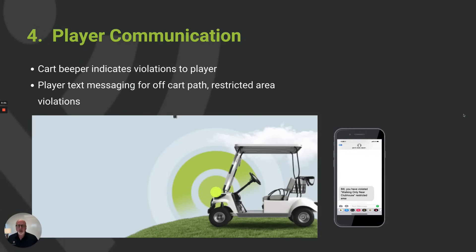How does the system communicate directly with players who enter areas they shouldn't? We have two options. One is the beeper that's included with the advanced package and gets embedded into the golf cart — it has a loud, annoying, embarrassing beep that alerts the player when they enter an area they shouldn't be and turns off when they leave that area. The second is, if you have a list of all players' mobile phones — either through a T-sheet integration or another system you can download to a spreadsheet — we can upload that into the Fairway IQ system and send automatic text alerts directly to players' mobile phones.